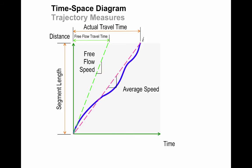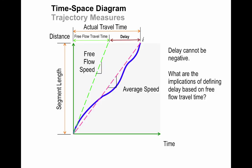For this particular roadway, we might have in mind a free-flow speed, which basically means how long would it take to traverse this section of road under uncongested conditions, or at 3 in the morning, or something like that. This is typically what we do in traffic analysis. And then we can compute the delay, which is the difference between the actual travel time and the free-flow travel time. Just to note that the delay cannot be negative, and you might want to think about what some of the implications are of defining delay based on free-flow travel time.